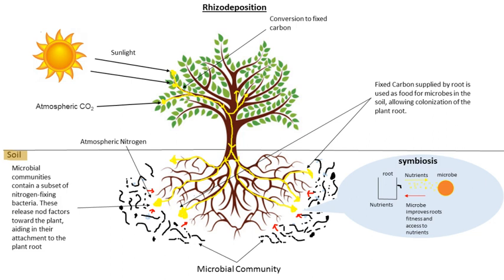Root symbionts may improve their hosts' access to nutrients, produce plant growth regulators, improve environmental stress tolerance of their host, induce host defenses and systemic resistance against pests or pathogens, or be pathogenic. Parasites consume carbon from the plant without providing any benefit, or providing too little benefit relative to what they cost in carbon, thereby compromising host fitness.